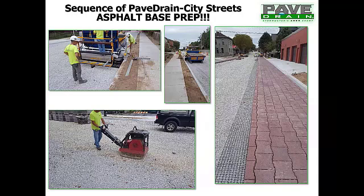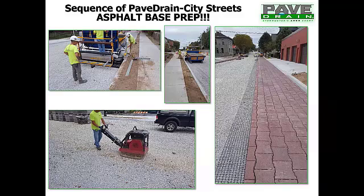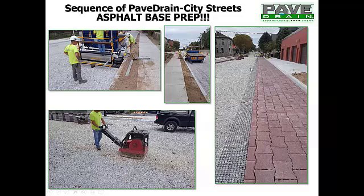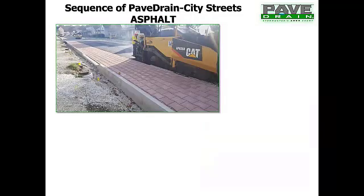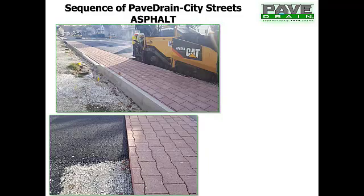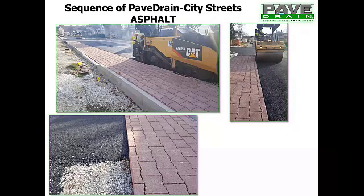On the right-hand side is the project where you can see the geogrid that was extended past the paved drain. The contractor had every intention of coming back in and cutting that off prior to the asphalt being placed. Didn't get around to it, but what it ended up doing is tying everything together — quite the way to go about it. You can see the asphalt being tied into the grid right on top of that, and the roller machine going right next to it.